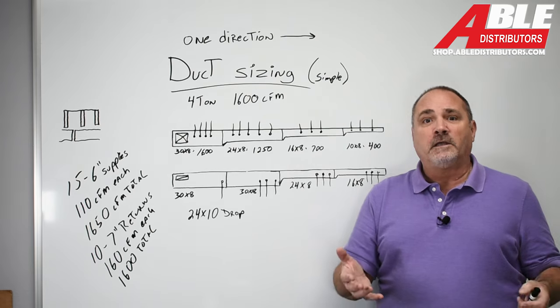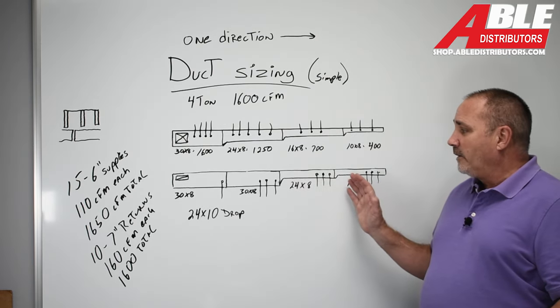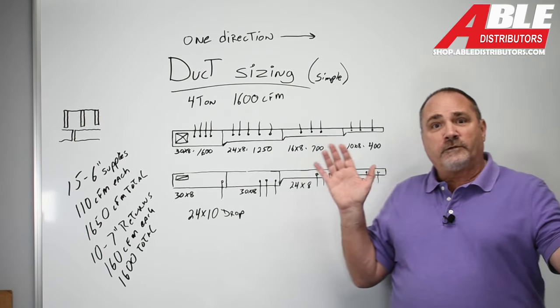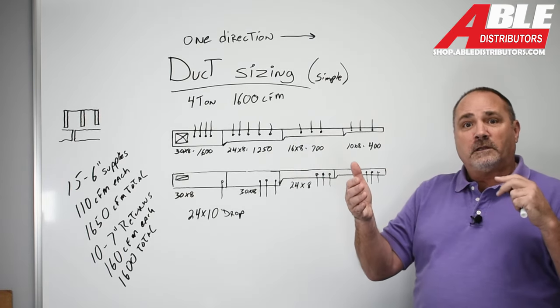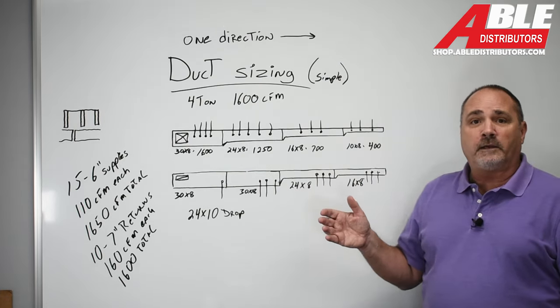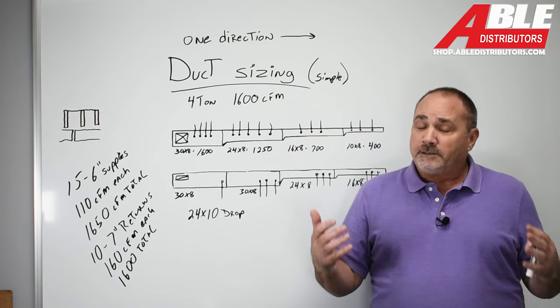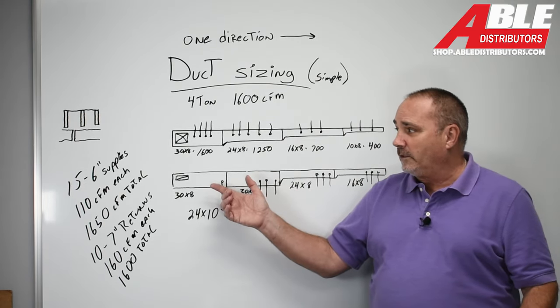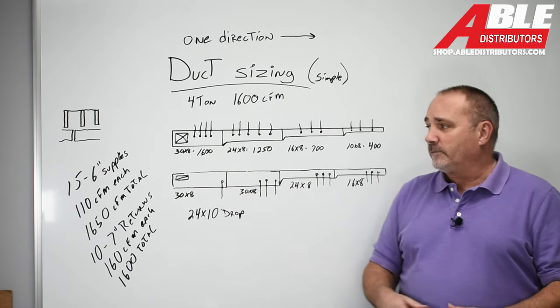So the two trunk lines don't match perfectly, and they're not really designed to match perfectly. Sometimes they might, but more often than not, you're going to find that the bulk of your returns are in from the outside walls, in the middle of the house. So usually your return trunk line ends up to be shorter. It doesn't mean that it can be smaller. You still have to be able to have the capability of a full 1600 CFMs.